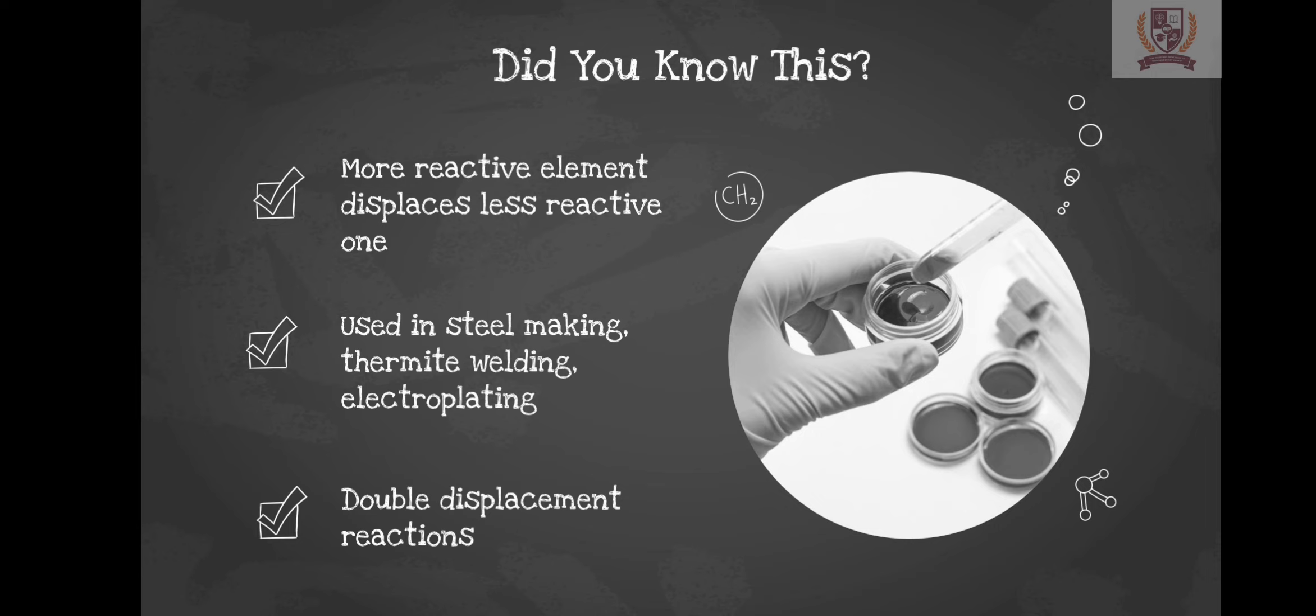As we conclude this topic today, let's recall that only a more reactive element can displace a less reactive one from its solution. This procedure is commonly used in steel making, in thermite welding and in electroplating. There are also double displacement reactions where two displacements take place.